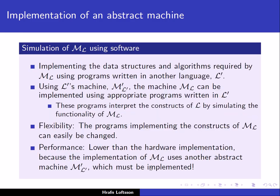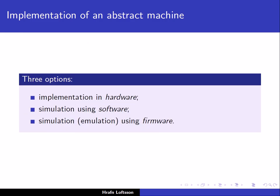Of these three possible options for implementation of an abstract machine — implementation in hardware, simulation using software, or simulation using firmware — the second option, simulation using software, is by far the most common one. In that case, we are implementing an interpreter for our abstract machine using software, which means we are using another abstract machine that has already been implemented.